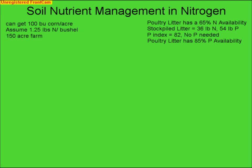The objective of this video is to use soil test parameters to calculate the total amount of nitrogen and phosphorus needed to grow a sweet corn crop in North Carolina.